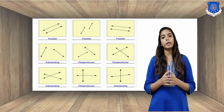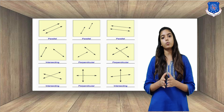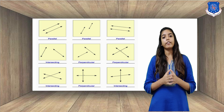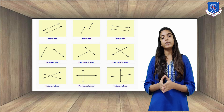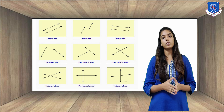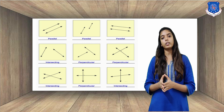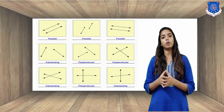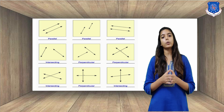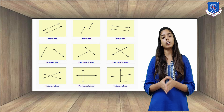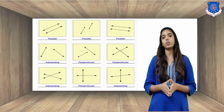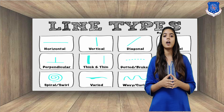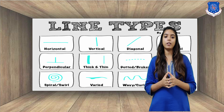There are types of lines — for example, definite line, indefinite line, horizontal line, vertical line, parallel line, perpendicular line, curve lines, etc. As you can see on the screen, these are the types of lines.